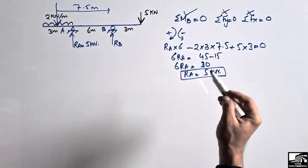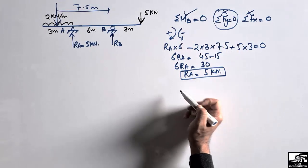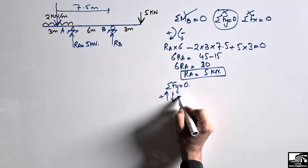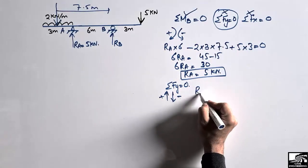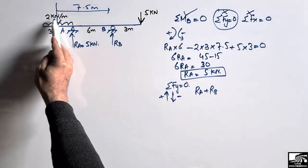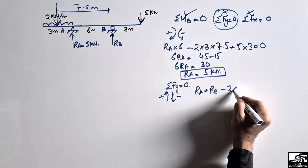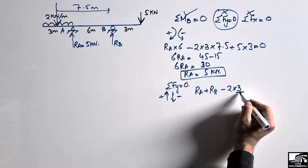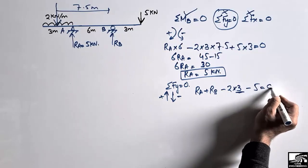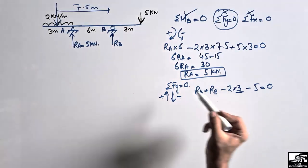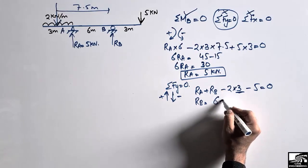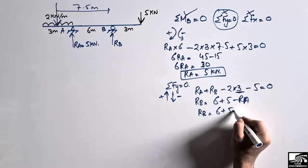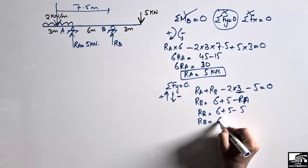Now we have one unknown remaining, so we can use the vertical equilibrium equation to find RB. Summation of vertical forces equals zero. Upward forces are taken as positive and downward forces as negative. The upward forces are RA and RB, while the downward forces are the 2 kN/m distributed load and the 5 kN point load. So: RA + RB − 2×3 − 5 = 0, giving RB = 6 + 5 − 5 = 6 kN.